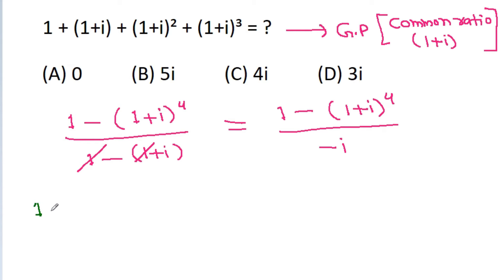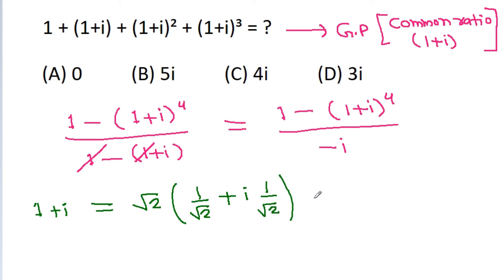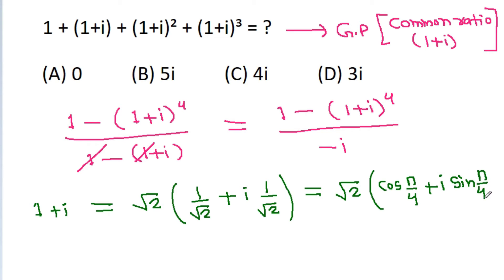(1 plus iota) can be written as root 2 times (1 by root 2 plus iota times 1 by root 2), where 1 by root 2 is cos(pi/4) and iota times 1 by root 2 is sin(pi/4). So it equals root 2 times e to the power i*pi/4.